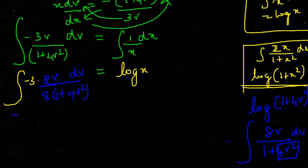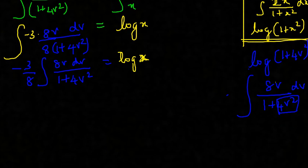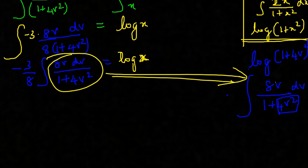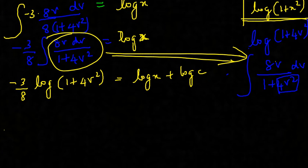Taking 3/8 outside and rewriting, we get: integral of 8v dv / (1 + 4v squared) = log x, which we have already integrated. Applying the formula, this becomes minus (3/8) log(1 + 4v squared) = log x + log c, where c is an arbitrary constant. The remaining part of the sum is just to expand this and complete it.